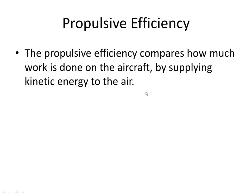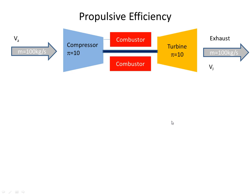Propulsive efficiency is defined as the efficiency that compares how much work is done on the aircraft by supplying kinetic energy to the air. Let's look at an engine. Here we have a jet engine: compressor, combustion can, turbine, and exhaust, taking in some air and accelerating it out the back. Let's say the air is coming in at velocity Va and going out with velocity Vj. The air at the inlet has a kinetic energy of mVa² / 2 and at the outlet it has a kinetic energy of mVj² / 2.